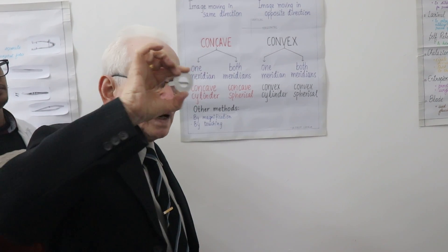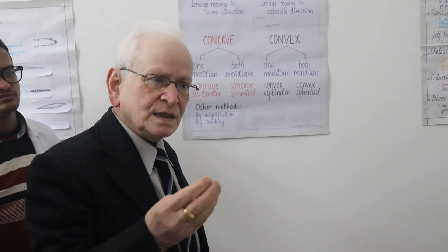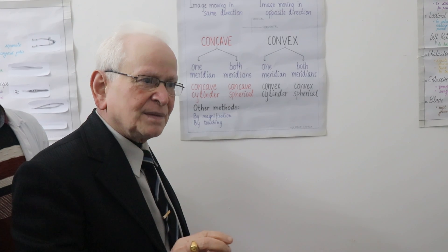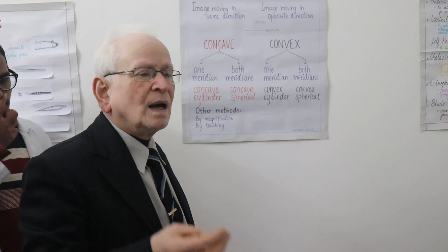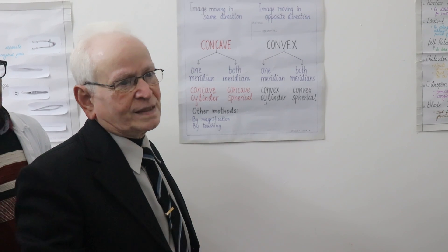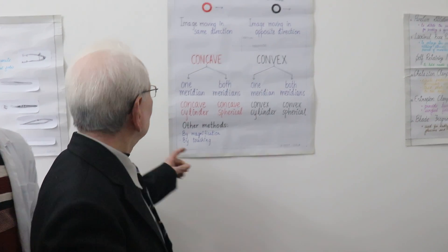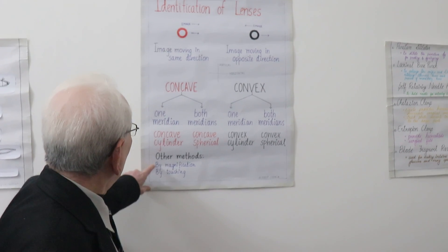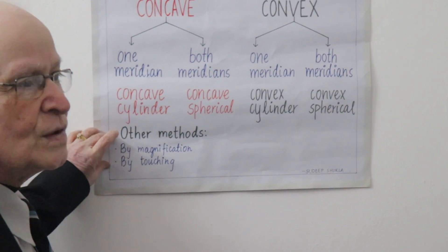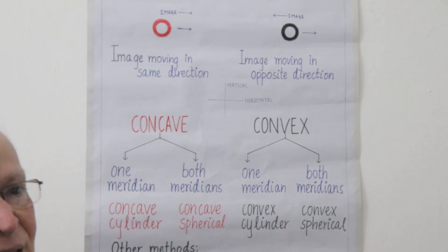Vertical movement and horizontal movement will tell you whether it is spherical or cylindrical. The same thing will tell you whether it is concave or convex. This is the most reliable conformity test. Other tests also exist — by magnification and touch — but they are not so reliable. This movement test is the most reliable test.